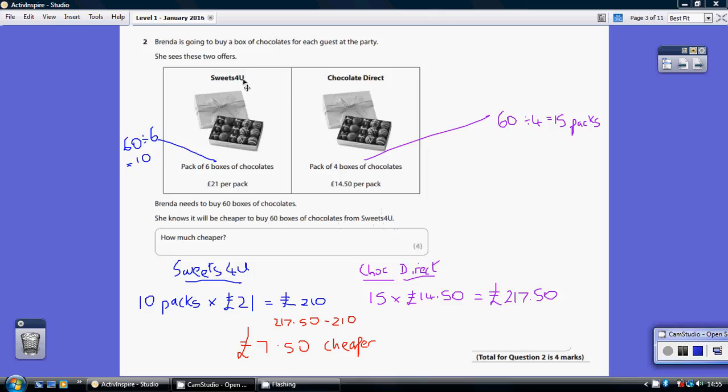Let's look at Sweets for You first of all. She needs to buy 60 boxes, and there are 6 boxes in each pack. So how many packs is that going to be? It's 60 divided by 6, which is 10 packs.